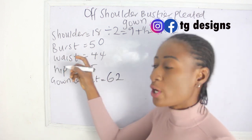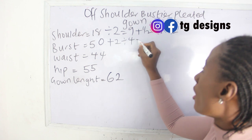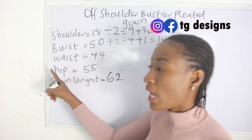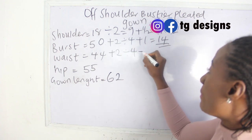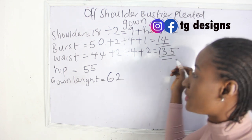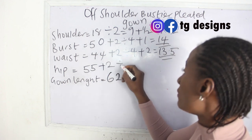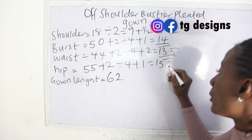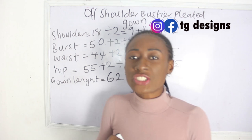Our bust is 40; 40 plus 2 divided by 4 plus 1 gives us 14 inches. Our bust is 44; 44 plus 2 divided by 4 plus 2 gives us 13.5 inches. Our hip is 53; 53 plus 2 divided by 4 plus 1 gives us 15.25 inches. Our gown length is 60 inches, which means our desired length.